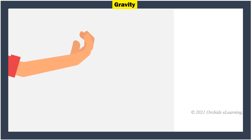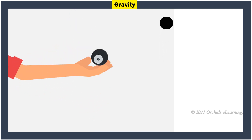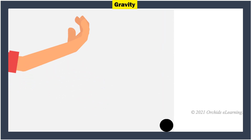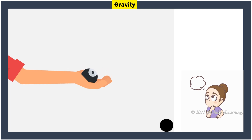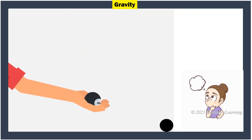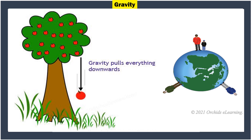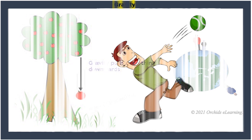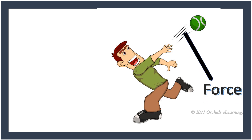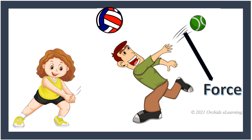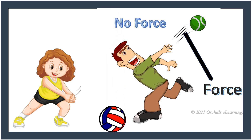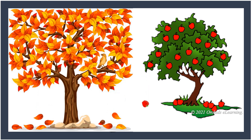Gravity: What happens when we throw a ball up into the air? It first rises up, then seems to stop, and then falls to the ground. Why does it fall down? Why doesn't it keep going upwards? This is because of the force of gravity. The force that pulls objects downwards towards the center of the earth is called gravity. When you throw a ball up, you throw it with a lot of force — more than the force of gravity — so it rises. As the ball moves up, it loses this force and then gravity pulls it down.